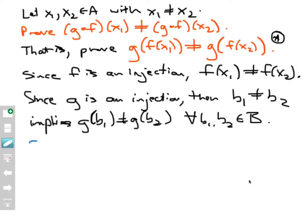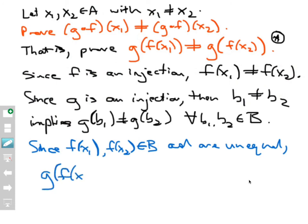So since f of x1 and f of x2 do happen to belong to B and are unequal, what does this mean? That means that g of f of x1, g of that point, is not equal to g of f of x2. And that is what I wanted to prove way up here.